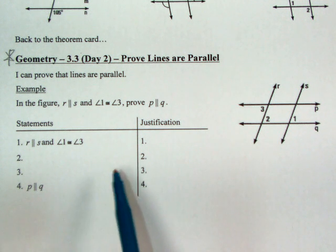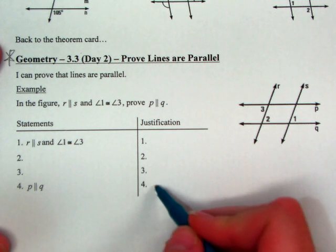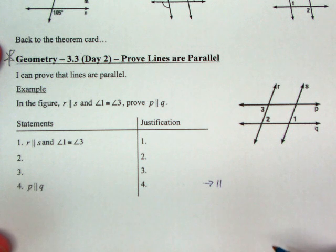So you're going to be focused on those four theorems on your theorem card, where they say if certain things happen, then the lines are parallel. Okay, that's where we're headed.